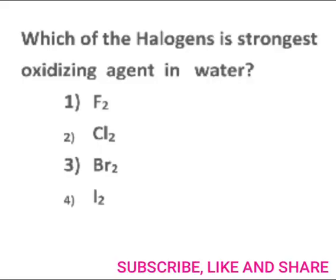Hello students, in this video let us try to find out the solution for the question on your screen: which of the halogens is the strongest oxidizing agent in water? Is it F2, Cl2, Br2, or I2?